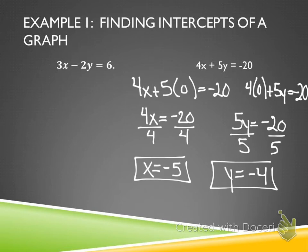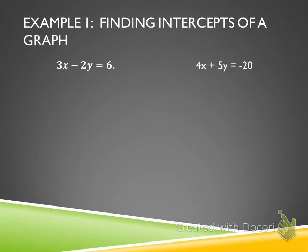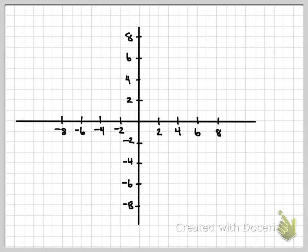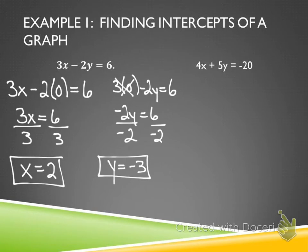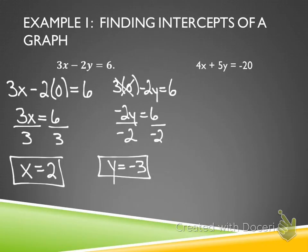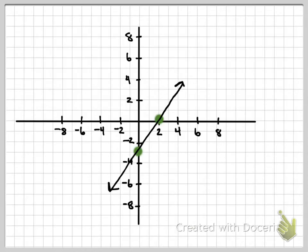Now we're going to graph these two equations using the x and y-intercepts. Set up two graphs on your graph paper. For the first problem, our intercepts were x = 2 and y = -3. Plot those points and draw a line straight through them. Then write the equation 3x - 2y = 6 on the graph, and you're done.